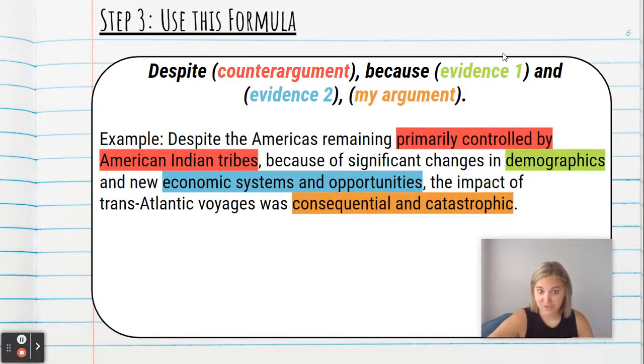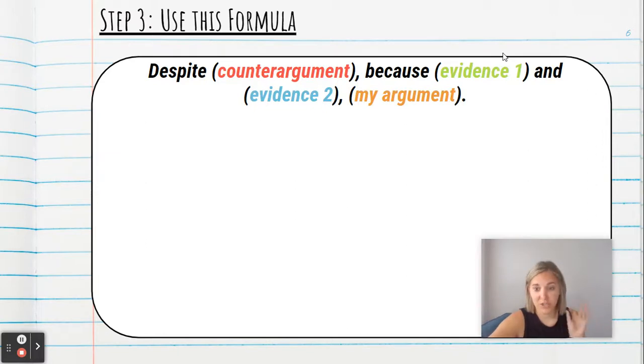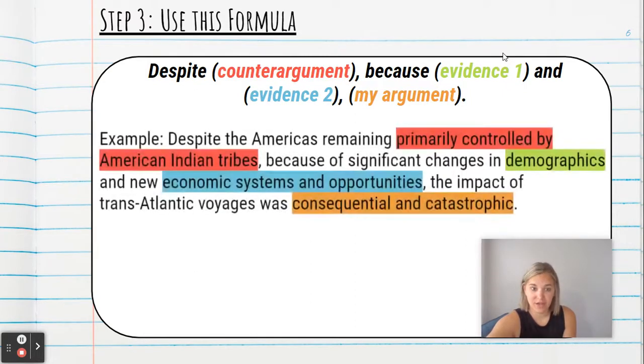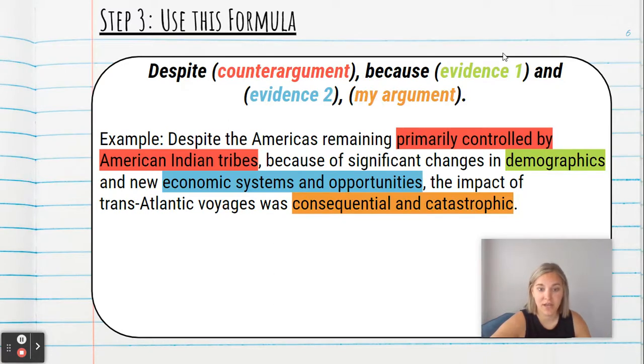So then I have given students a sample here and actually what you'll want to do is have them actually do this. So you'll want to pause the video here and you'll have them write their own thesis statement and then they can evaluate the one I have created. Despite the Americas remaining primarily controlled by American Indian tribes because of significant changes in demographics and new economic opportunities and systems the impact of transatlantic voyages was consequential and catastrophic.